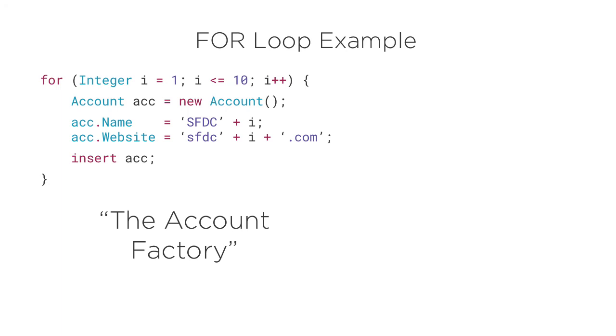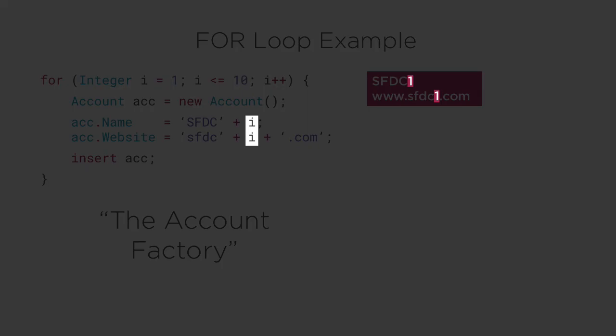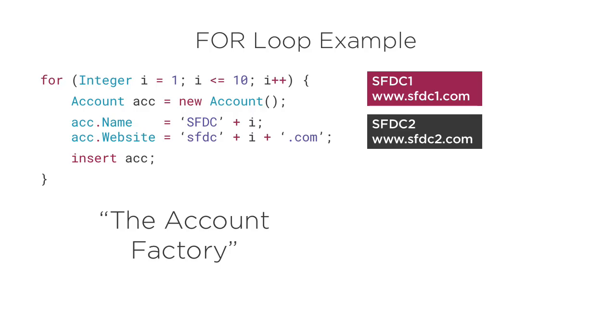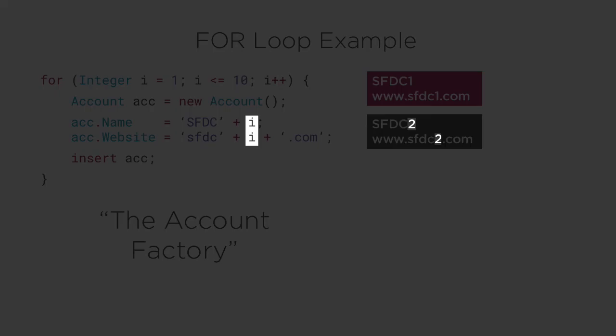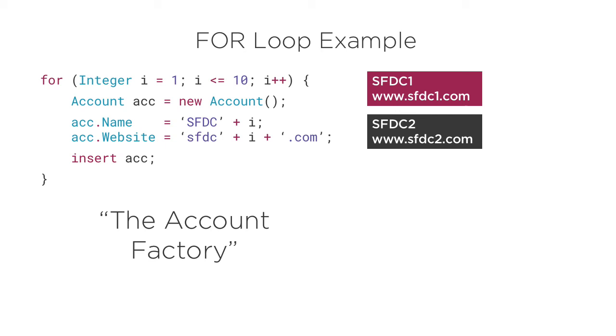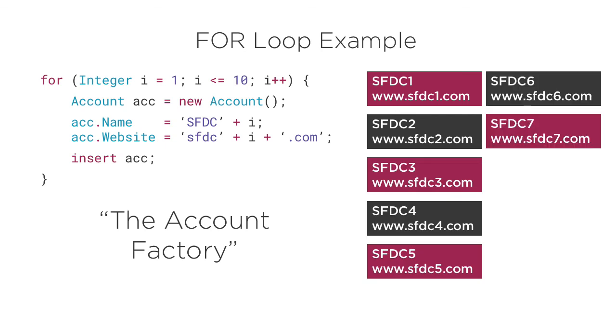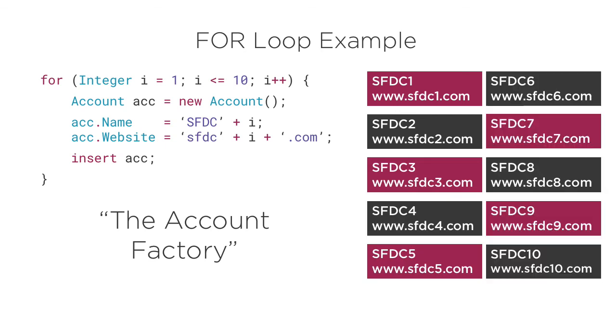As we run through this loop, here's what the output will be. The first time the loop iterates, it'll create a new account with name sfdc1 and website sfdc1.com. The 1 comes from the variable i. The second time it loops, it'll create another account with sfdc2 as the name and sfdc2.com as the website. Again, the number 2 comes from the variable i. This pattern continues until the loop creates its final account when i equals 10.